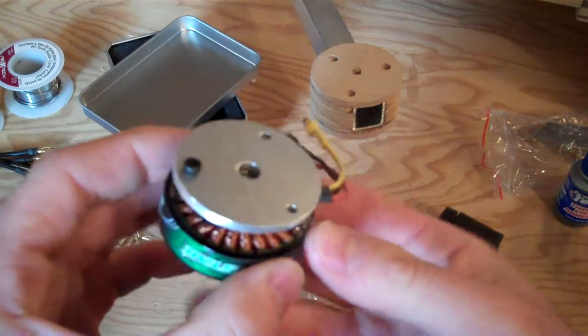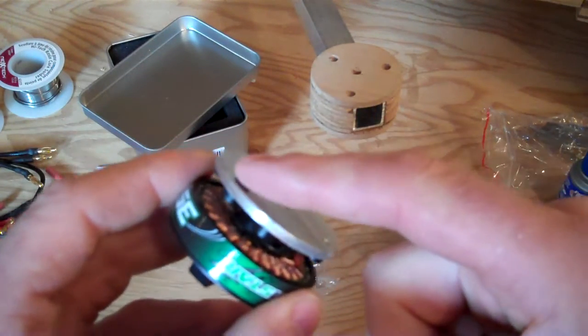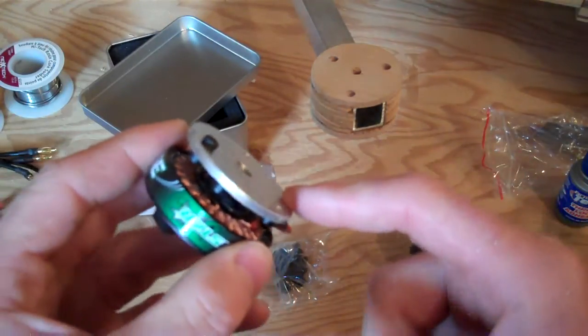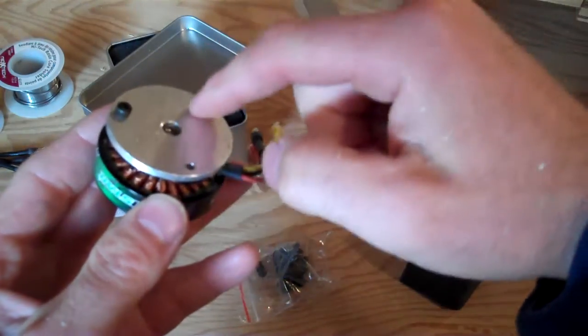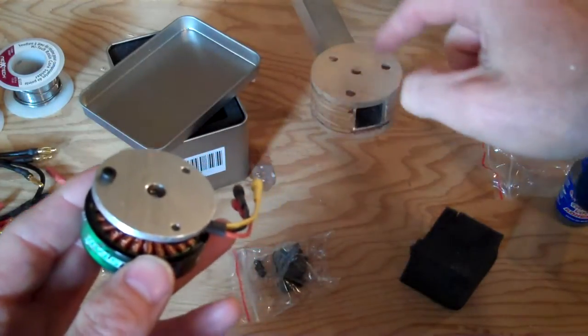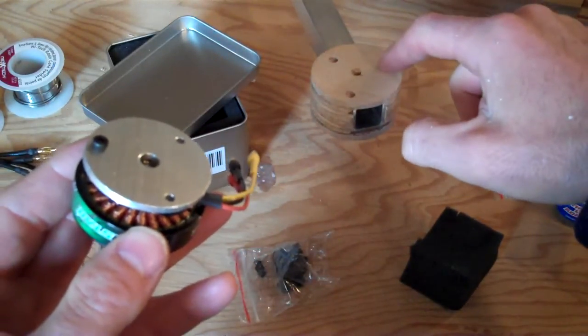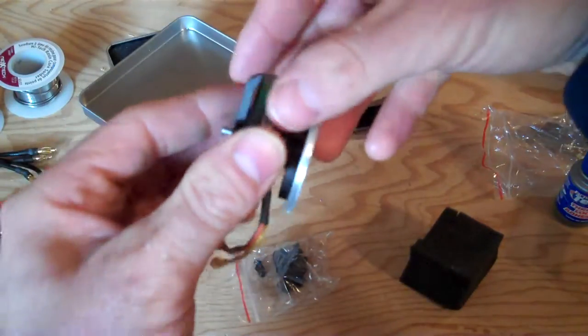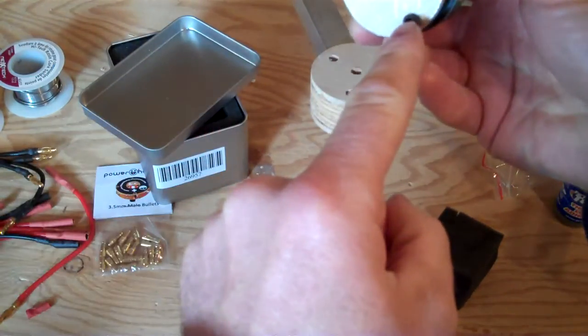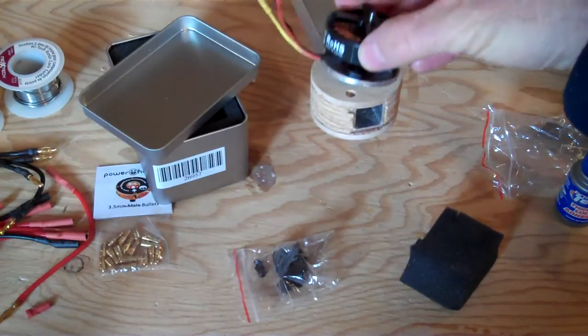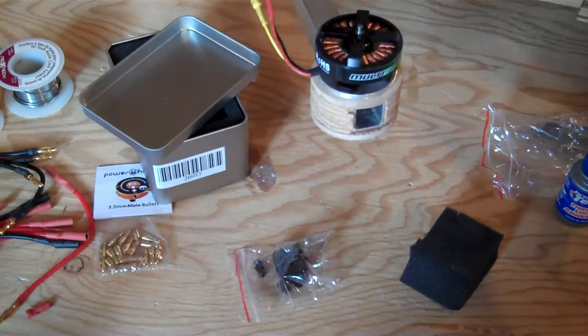Because the head of the screw sticks out through the bottom of the plate, you take the same template and pre-drill some holes in the top of your plywood. Counter-sink enough room for the head of the screw to fit in. There you go, that's how that works.